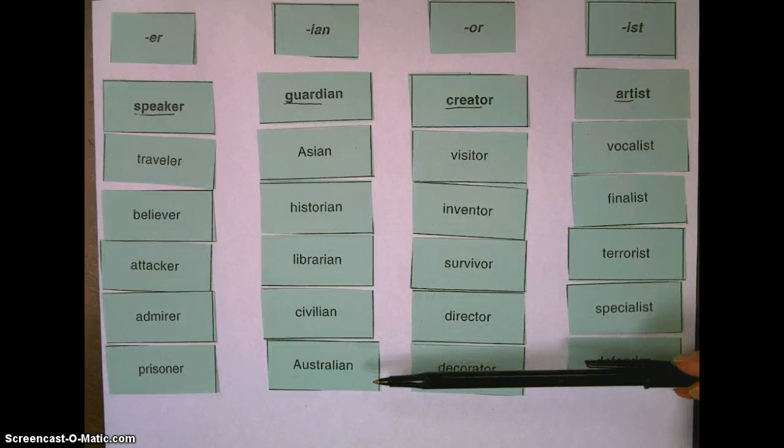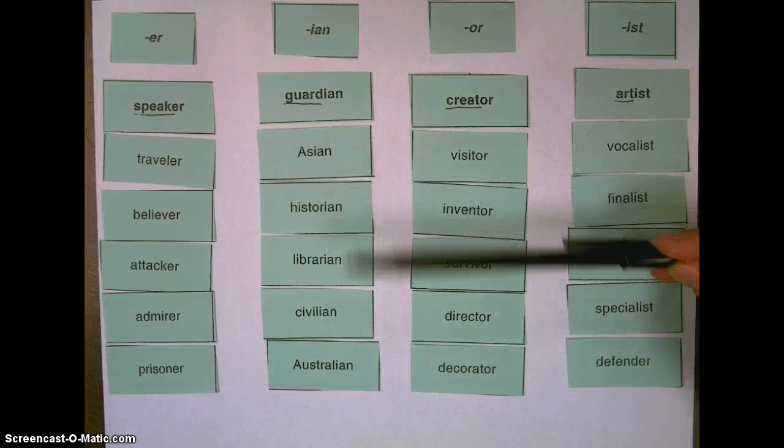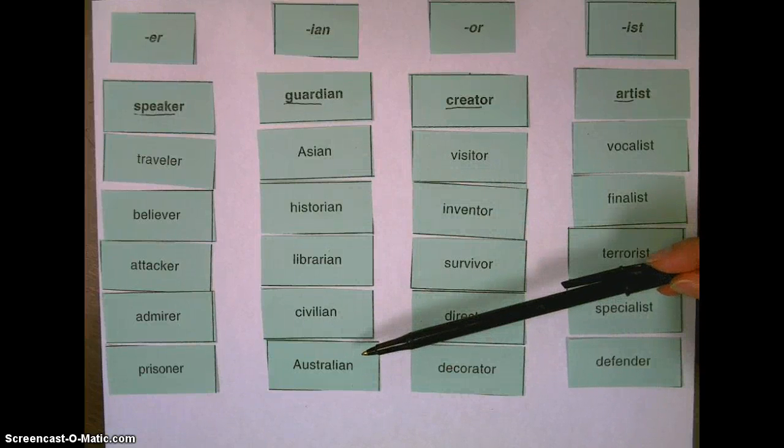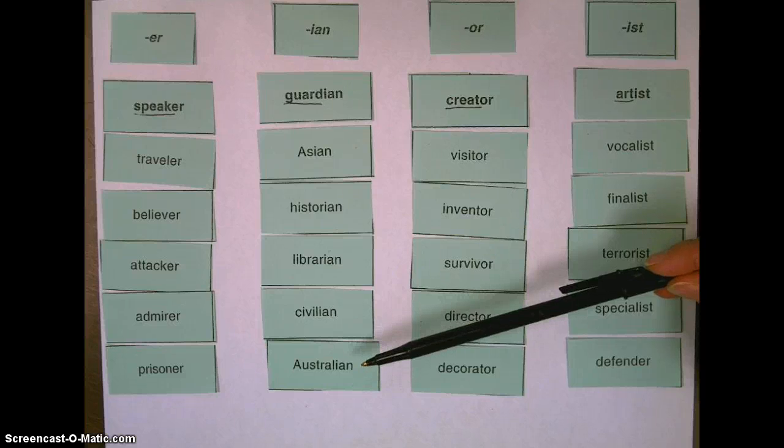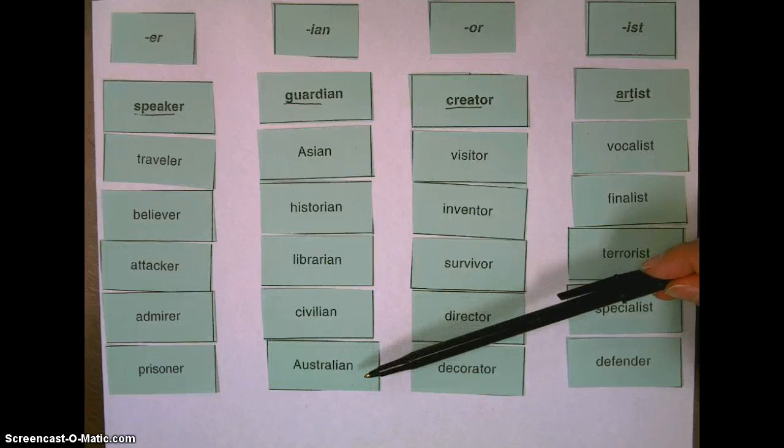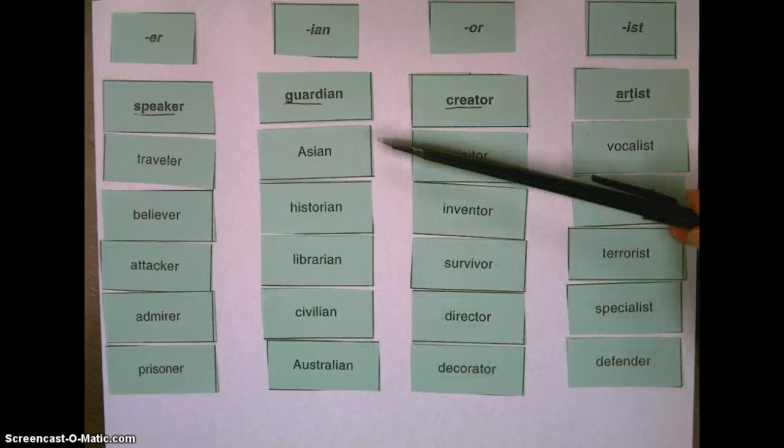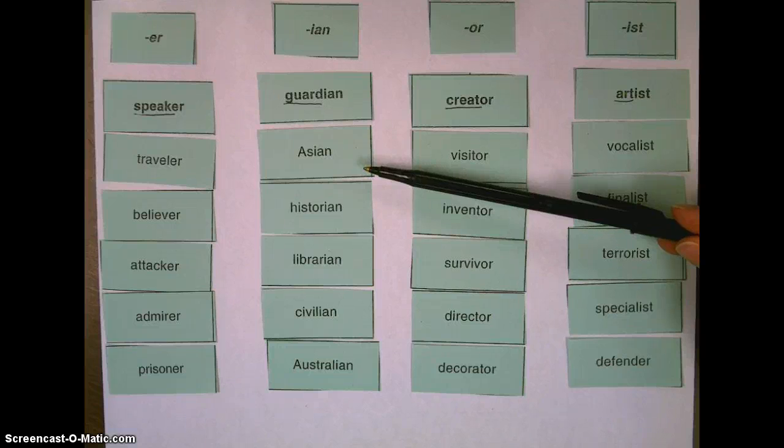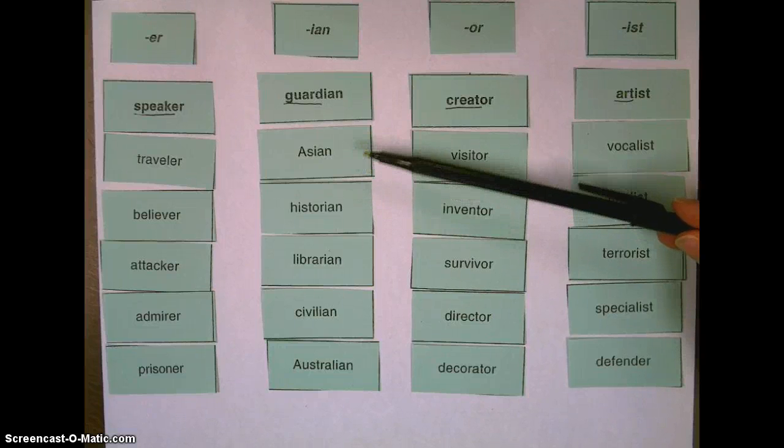And I want to quick point out on Asian and Australian, I noticed that those words start with a capital letter. Those are proper nouns that are talking about a specific type of person. An Australian is a person from Australia, and an Asian is a person from Asia. So those, while you're writing your spelling words, those always need to be capitalized because those are proper nouns.